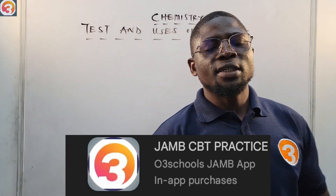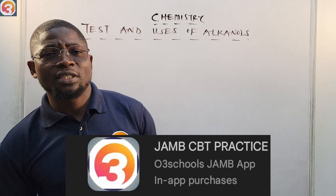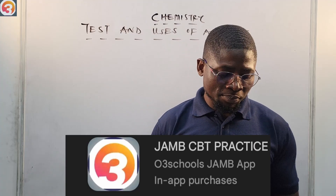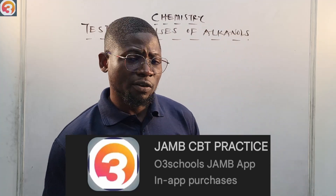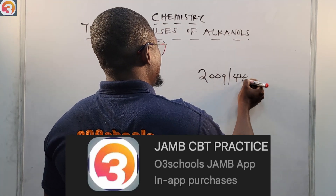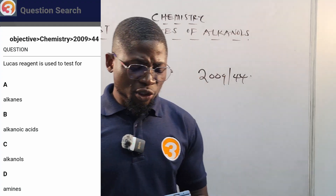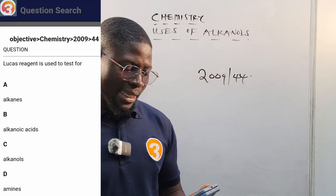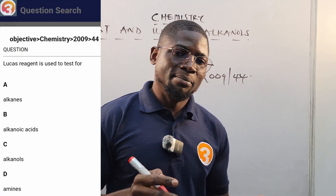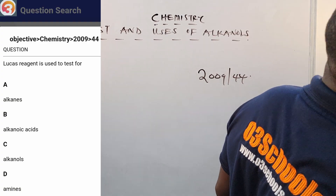Do not forget that this tutorial is brought to you by the one and only O3 School Jam CBT practice app — it is all you need to succeed in your exam. Let us see a question from the O3 School Jam CBT app. This is a 2009 question number 44: 'Lucas reagent is used to test for: A) alkanes, B) alkanoic acid, C) alkanols, D) amines.'